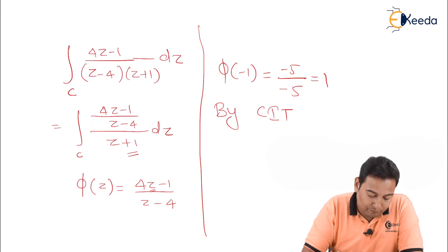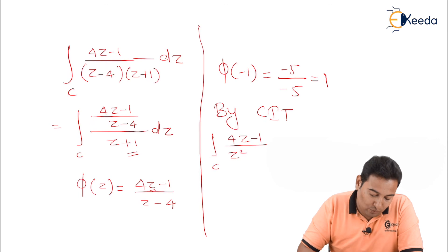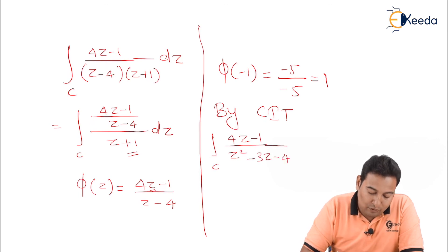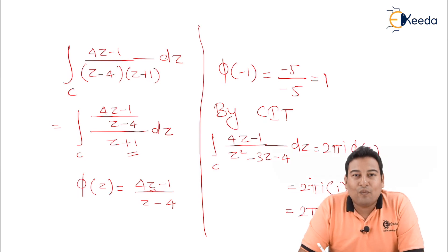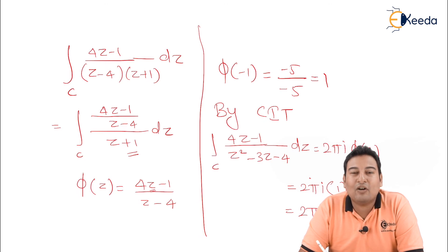By the Cauchy Integral Theorem, ∮ (4z − 1) / (z² − 3z − 4) dz = 2πi · φ(z₀) = 2πi · 1 = 2πi. So the final answer is 2πi. We are done with the Cauchy Integral Theorem. In the next videos, we will discuss the last and final part of complex integration, which is residues.